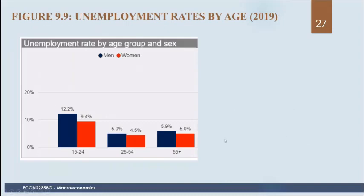There are differences by age group and sex. The unemployment rate tends to be higher for younger people, as they're switching jobs and not yet in an established career. But the duration of unemployment is much shorter for younger people. Older people tend to have much lower unemployment rates. Women tend to have a lower unemployment rate when they're younger than men.